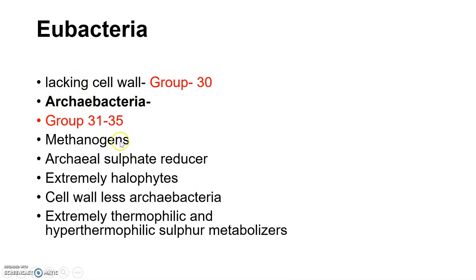The last division covers groups 31 to 35, totaling 35 groups in the Systematic Bacteriology edition. The last group is the Archeibacteria, groups 31 to 35, which includes methanogens, archeal sulfur reducers, extreme halophiles, cell wall-less Archeibacteria, and extremely thermophilic and hyperthermophilic sulfur metabolizers.